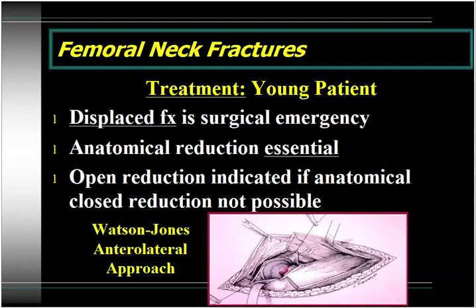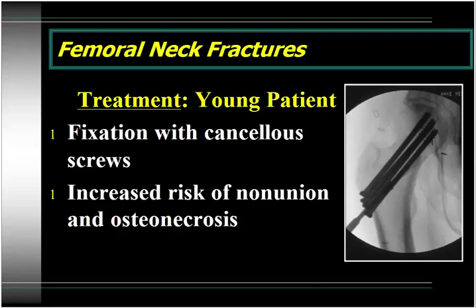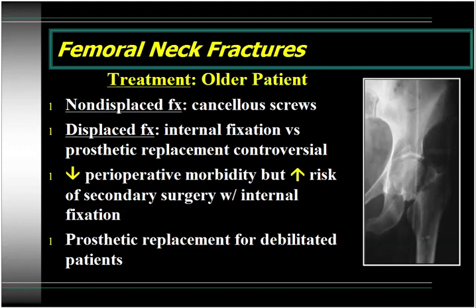In a physiologically young patient with a displaced fracture, this should be considered a surgical emergency. We're trying to reestablish blood supply to the femoral head and minimize the risk of osteonecrosis and nonunion — anatomical reduction is essential. If you cannot get an anatomical reduction through closed techniques, a Watson-Jones anterolateral approach is indicated to visualize the femoral neck, establish anatomical reduction, and proceed with stable internal fixation. Fixation with cancellous screws is the treatment of choice. Remember that in young patients with femoral neck fractures there is a significantly increased risk of both nonunion and osteonecrosis.